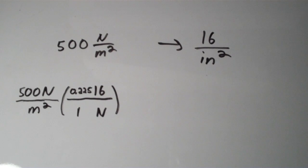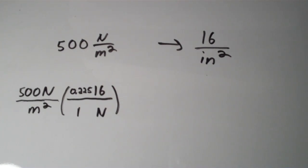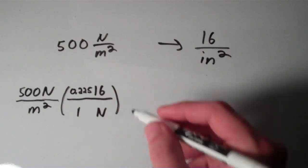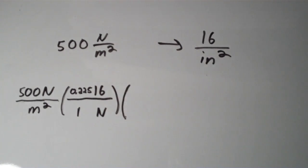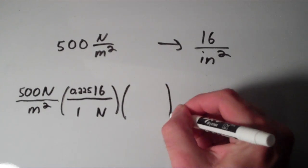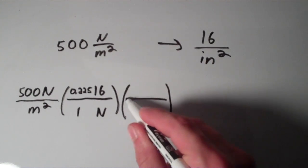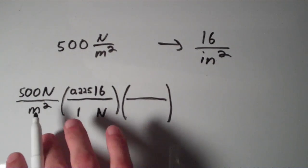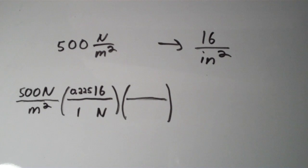That took care of the newtons. But now we still have square meters on the bottom that we have to get rid of. I'll set up another conversion factor to get rid of the square meters and eventually get square inches. I don't know the conversion from square meters to square inches directly, but I know the conversion from meters to centimeters and from centimeters to inches, so that will help.